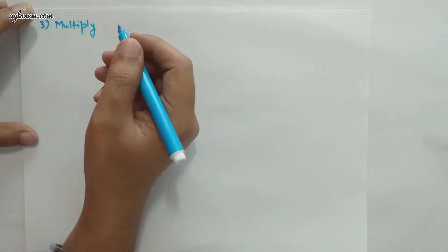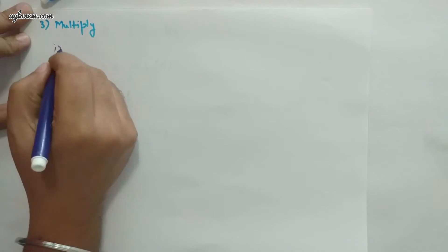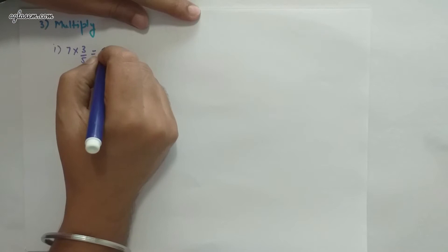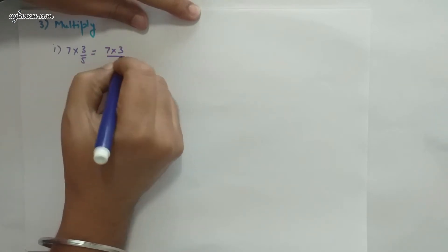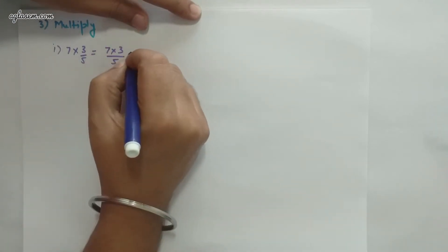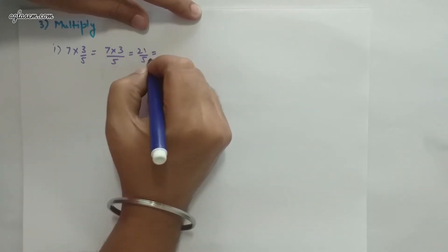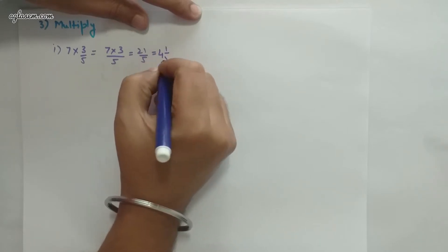Now coming to question number 3, where you have to multiply the fractions, reduce to lowest form, or convert into a mixed fraction. Part 1: 7×(3/5). Multiplication of fractions is simple — multiply the numerators: 7×3 divided by 5 = 21/5. Converting to a mixed fraction gives 4 and 1/5.